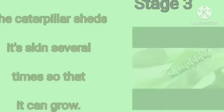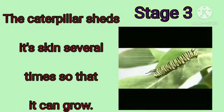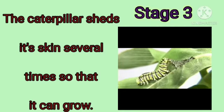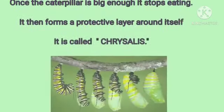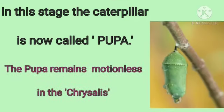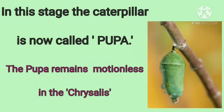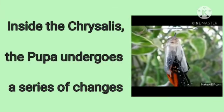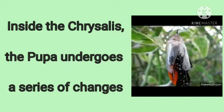Stage three: the caterpillar sheds its skin several times so that it can grow. Once the caterpillar is big enough, it stops eating and forms a protective layer around itself, called a chrysalis. In this stage, the caterpillar is now called a pupa. The pupa remains motionless inside the chrysalis and undergoes a series of changes.